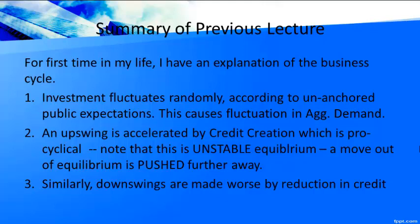Suppose investment fluctuates upwards for a while — that means aggregate demand picks up. When aggregate demand picks up, the economy starts booming and excessive credit creation starts to take place. If there is a move away from equilibrium, it is made even stronger by what we call pro-cyclical credit creation. So credit creation moves with the business cycle, making the business cycle even worse. This is exactly the unstable equilibrium.